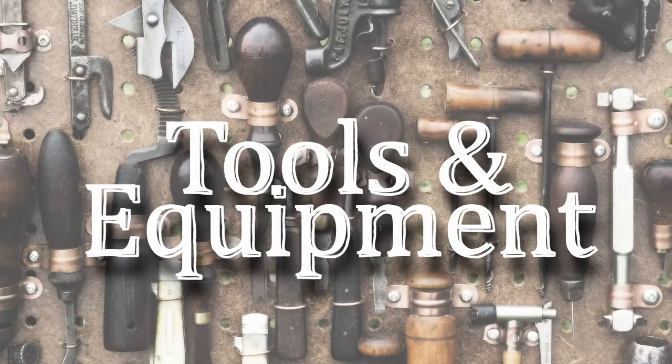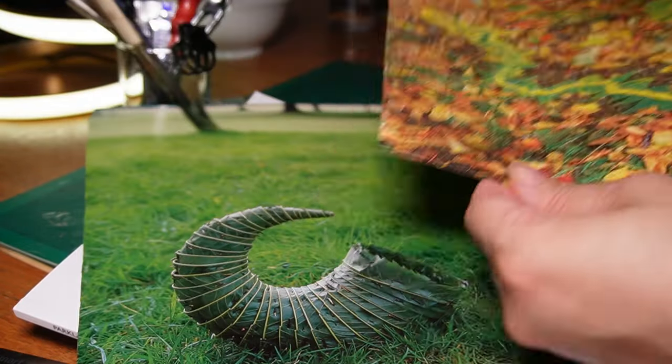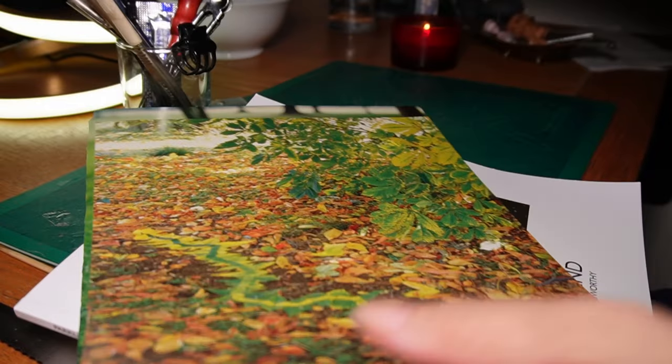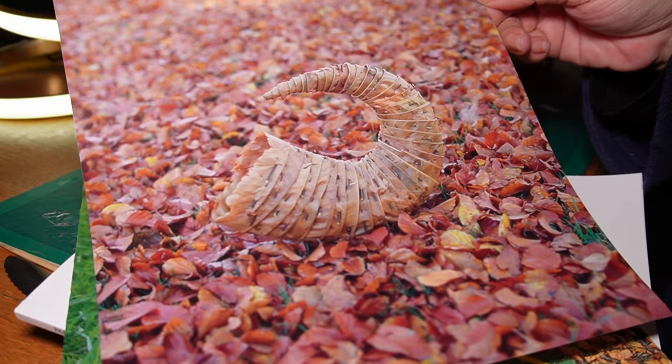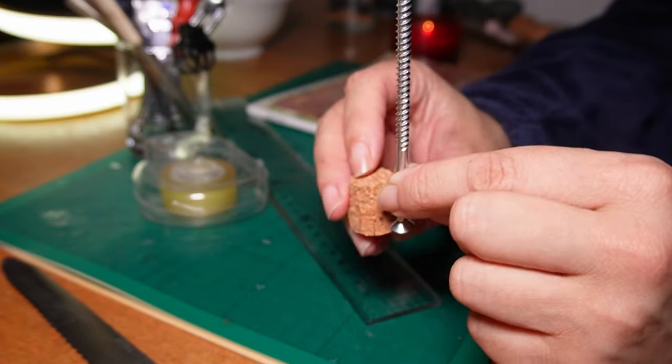I'll go through the equipment that we're going to need for the project. We need the paper that you've chosen for your project. I went for different colors because I wanted some variety, but feel free to keep to a single color. We need a cork and a long screw.